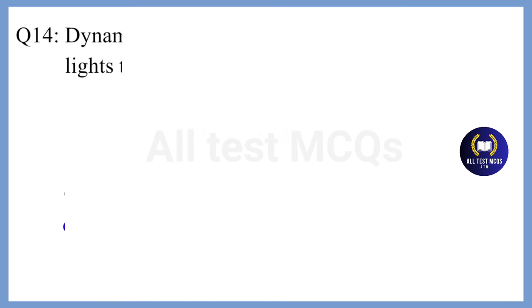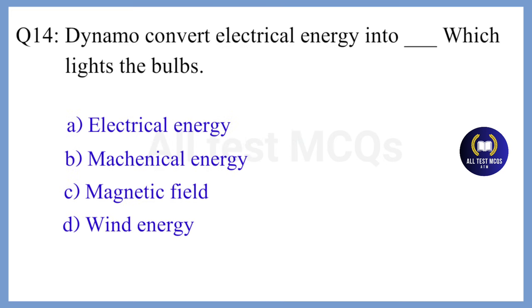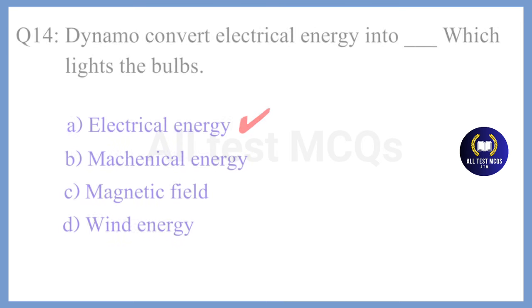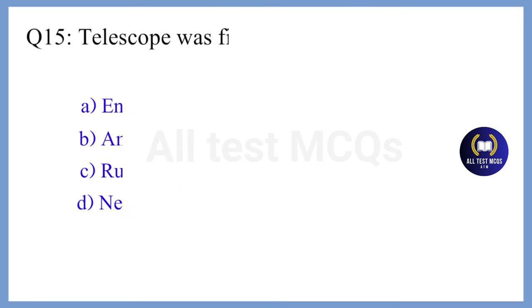Question 14. Dynamo converts mechanical energy into electrical energy which lights the bulb — the correct answer is Option A. Electrical energy.